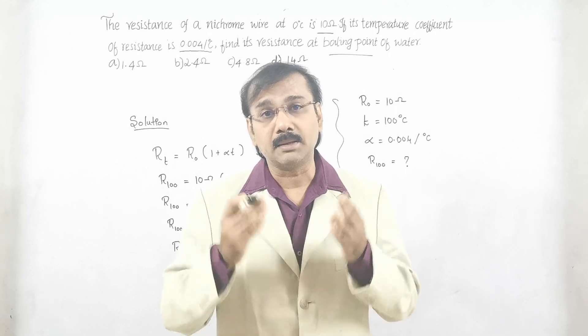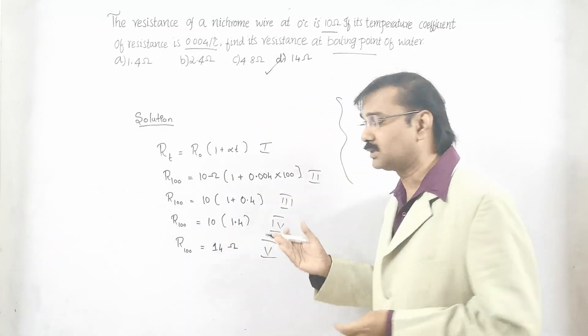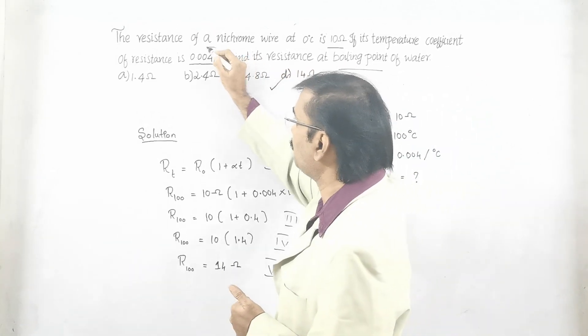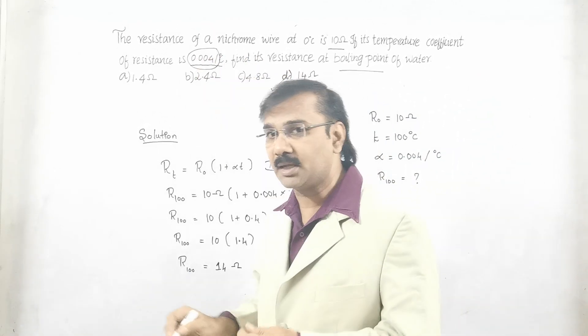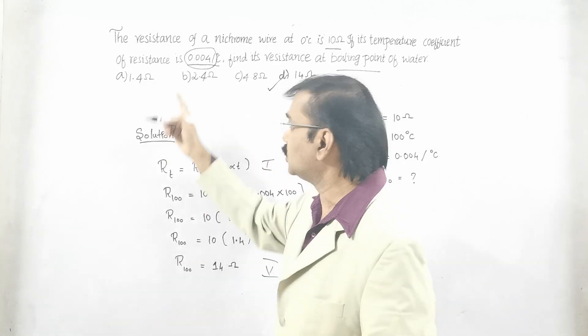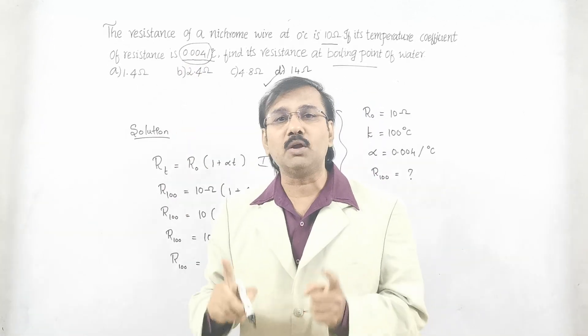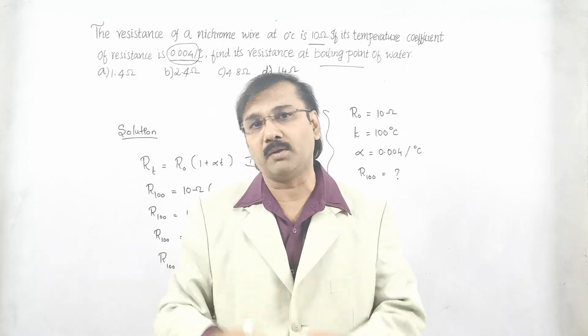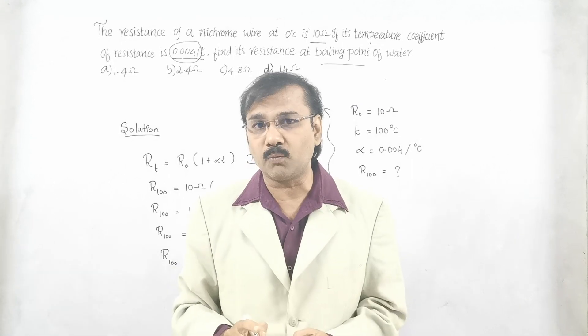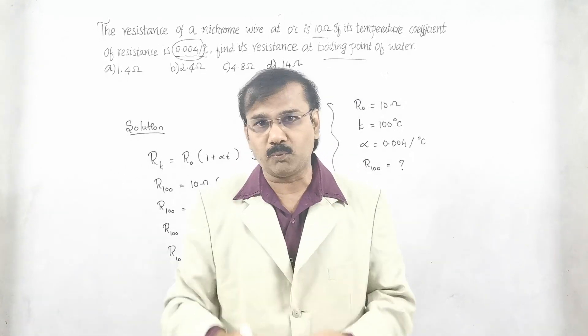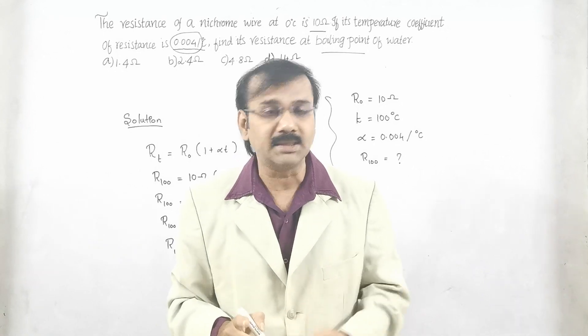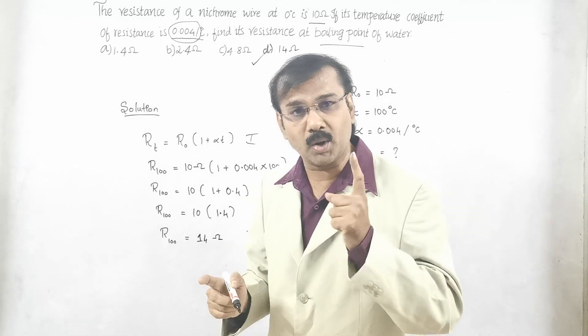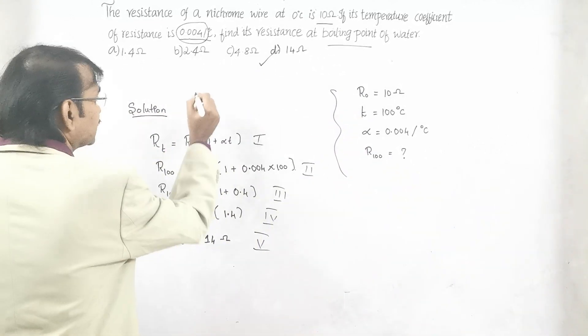We are going to the straight shortcut method which is asked in NEET and JEE questions. Let us go for the shortcut method. See, the important point you have to see is the temperature coefficient of resistance is 0.004. Remember, if it is 0.004, always keep in your mind the number 1.4. If it is 0.005, then the number is 1.5. If it is 0.006, yes you are right, it is 1.6. As per the given question, we are going to take it as 1.4.